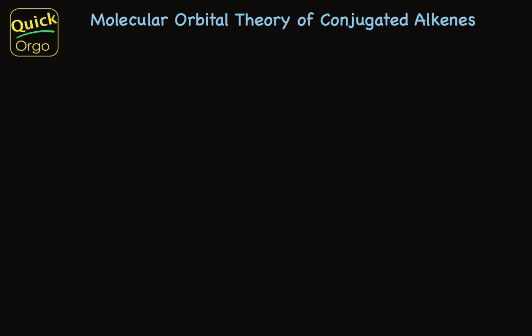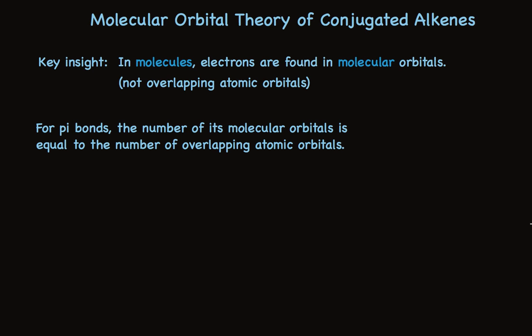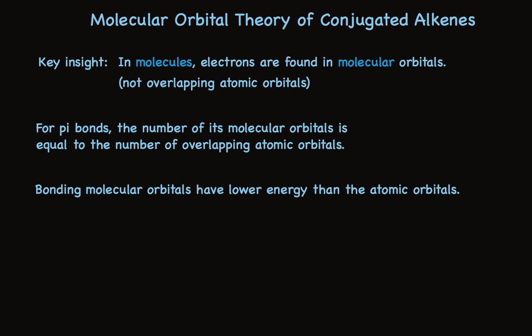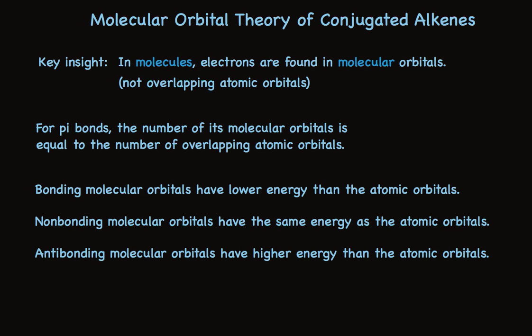Molecular orbital theory of bonding is built on a key insight: because we're talking about molecules, we should think about the regions of space in which electrons can be found as molecular, not associated with any particular atom or atomic orbital. An important tenet suggests the number of molecular orbitals equals the number of atomic p orbitals overlapping. Some molecular orbitals will be lower in energy — these are bonding molecular orbitals; electrons in them are more stable. Some will be the same energy — non-bonding. Others will be higher in energy — antibonding molecular orbitals — and electrons in them actually destabilize the molecule.